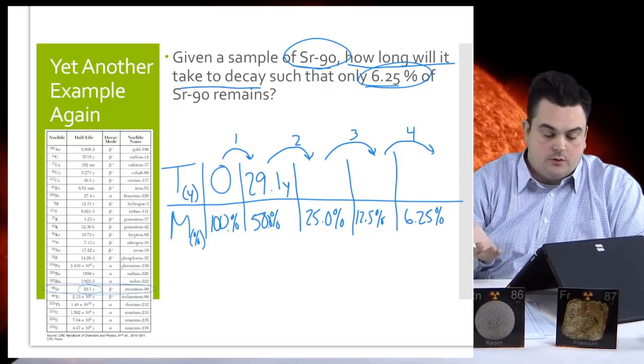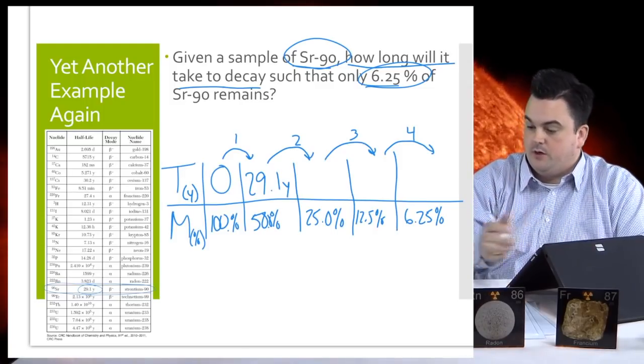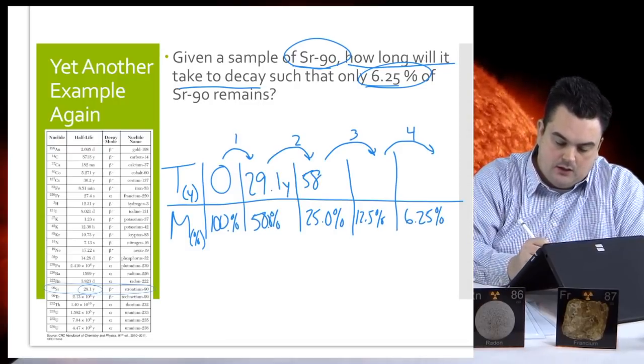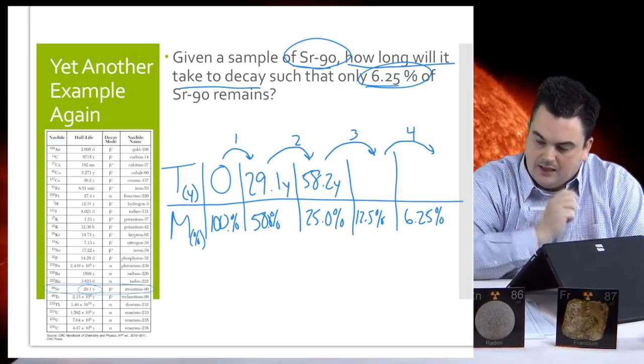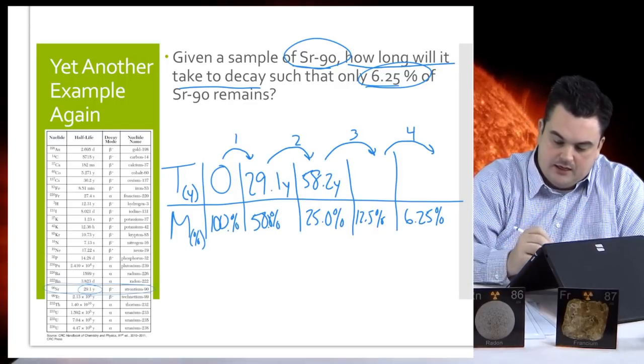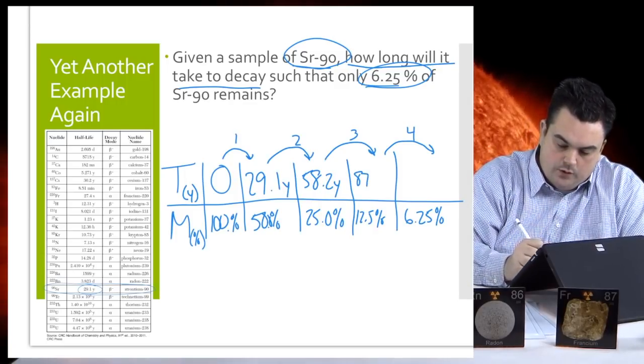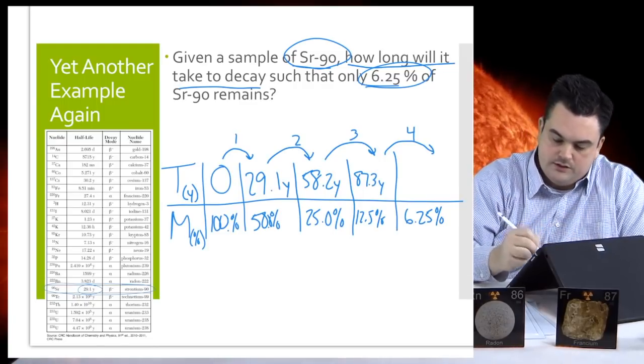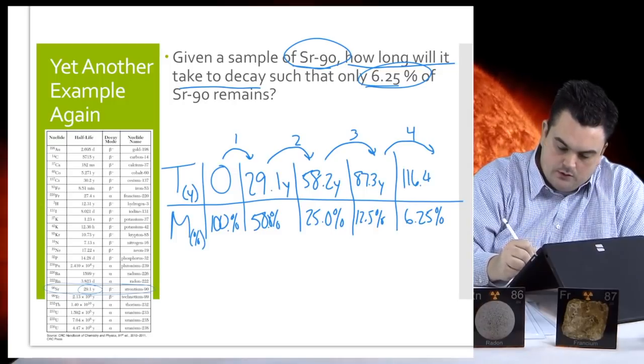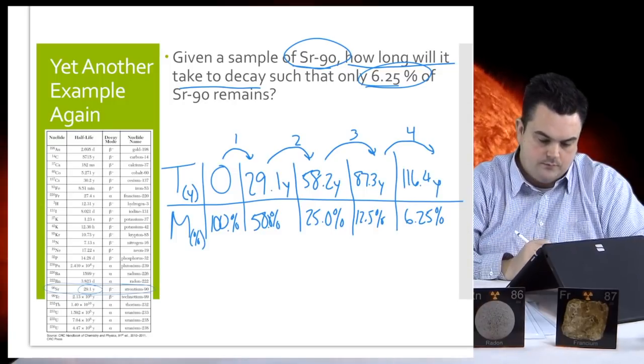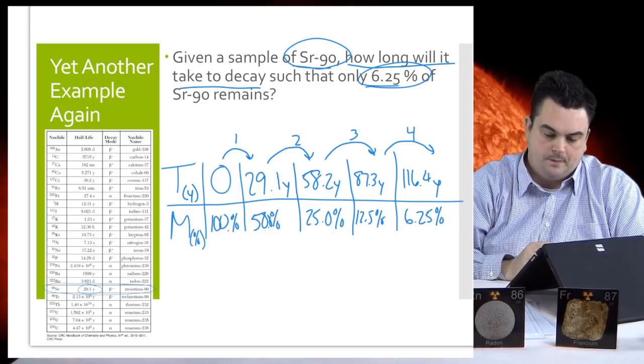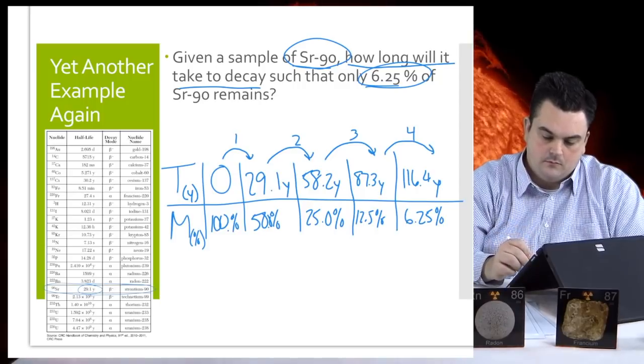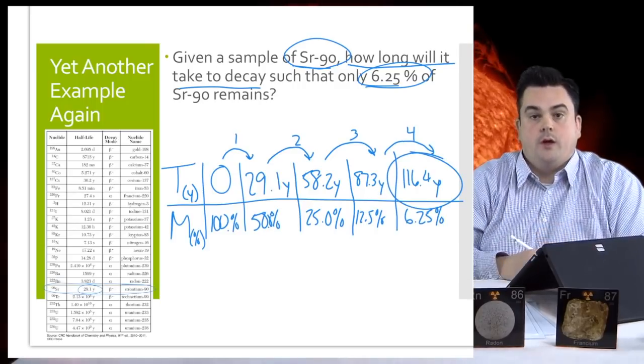All right. We got to fill in the rest of our row of time so that we can figure out how much time has passed by the time we get to the 6.25%. Okay. So, well, each half-life is 29.1. So I'm just going to add that to each half-life, right? So after a second half-life, that's 58.2 years. Adding another 29.1, I get 87.3 years. And another 29.1, I get 116.4 years. Good. So it looks like it took 116.4 years to get to 6.25%. So let's circle that time as our final answer. Okay. Good job.